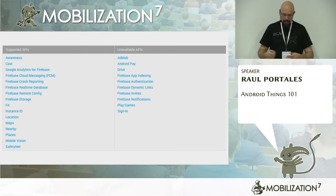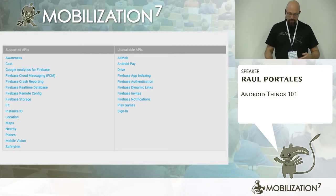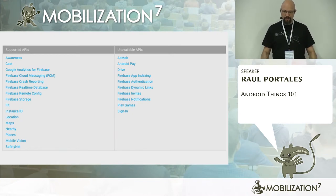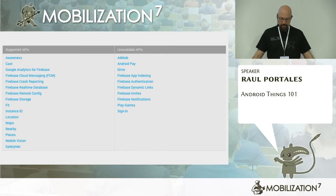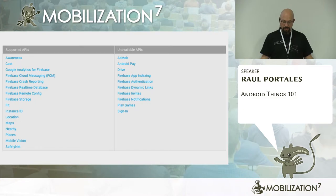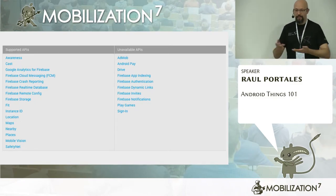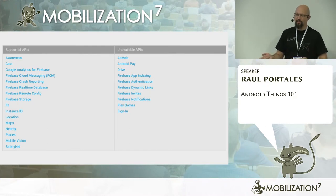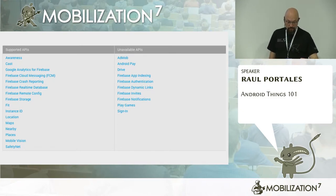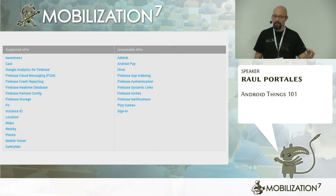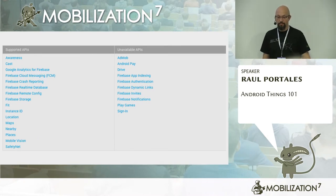Some APIs are unavailable: AdMob — you don't really want to show ads if you don't have a UI. Google Drive, Firebase App Indexing (really linked to browsing), Firebase Authentication, Dynamic Links, Invites, Firebase Notifications, Play Games, Sign-In. You see the theme — these are things not really needed on Android Things, but everything else is actually there. When I say Firebase Notifications are not available, Firebase Cloud Messaging is. So you can take your IoT device, register on Firebase, and send a notification to trigger whatever action on it.